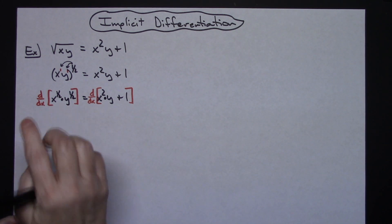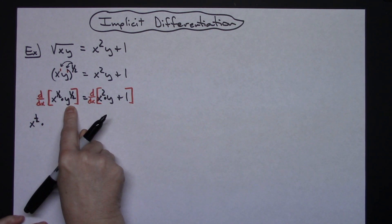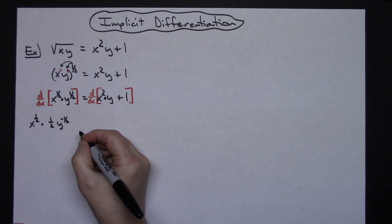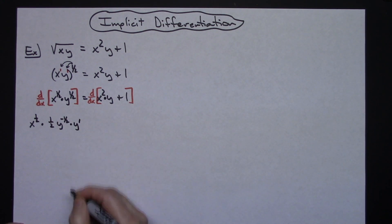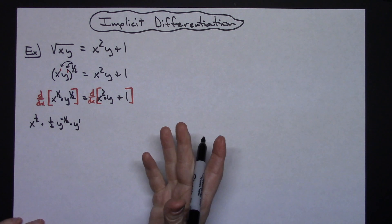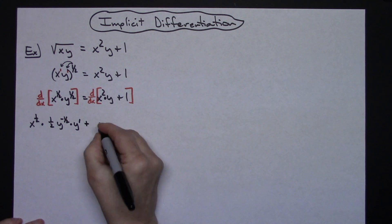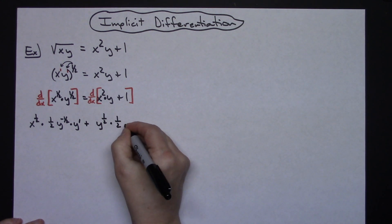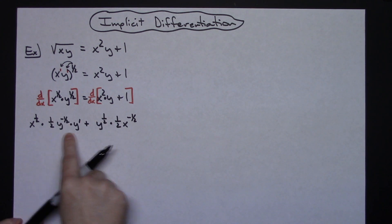I'm going to start product rule on the left. So I'm going to have the first, which is x to the 1 half, times the derivative of the second, which will be 1 half y to the negative 1 half — and keep in mind it's implicit differentiation, so I need a y prime. A lot of professors at this point will write dy over dx; I just like the prime notation better. So the first times the derivative of the second, plus the second, y to the 1 half, times the derivative of the first, which will be 1 half x to the negative 1 half.